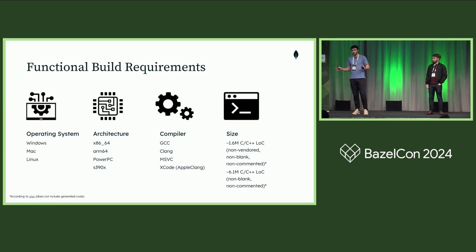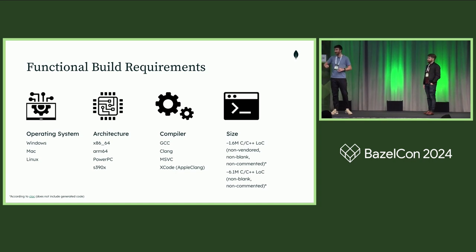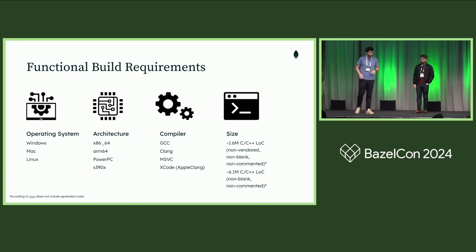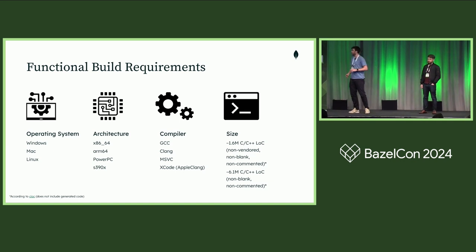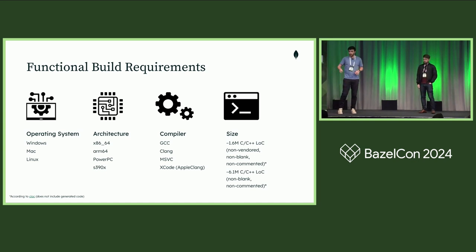I'm curious how many other people in the audience have to support IBM. Just one, right over there. We also have to support a few compilers: GCC, Clang, MSVC, and Xcode. And we have a pretty big C++ binary — 6.1 million lines of C and C++ code, including a bunch of vendored stuff, calculated using CLOC, which is an open-source tool.